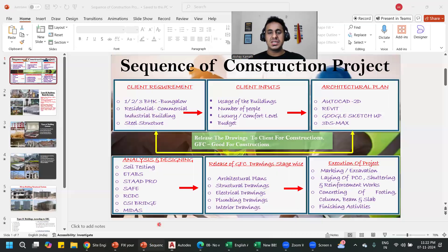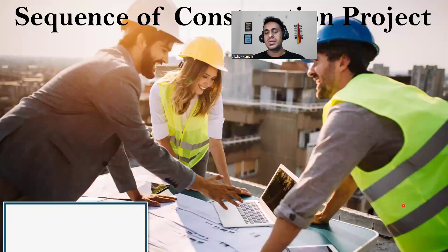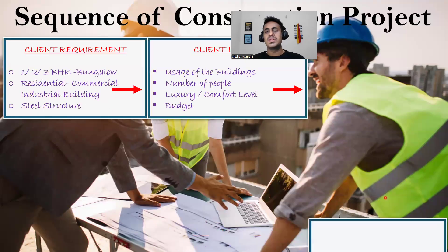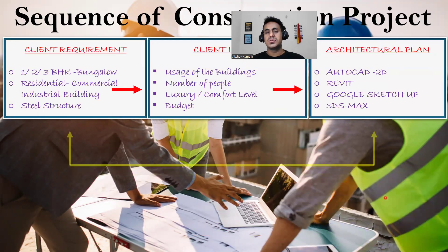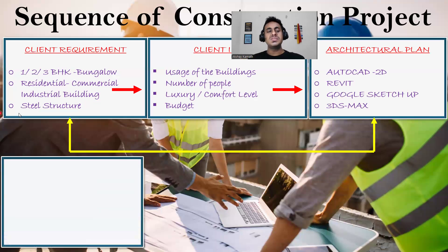Once these plans are done in AutoCAD 2D or Revit, we'll send the plan back to the client and ask them to re-verify and re-check. Whichever plan they like, they can go with that. Once the client approves — say they choose the first plan — all the architectural plans are finalized.